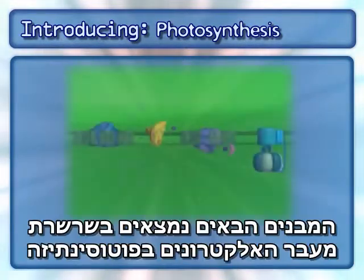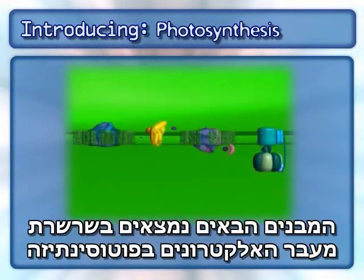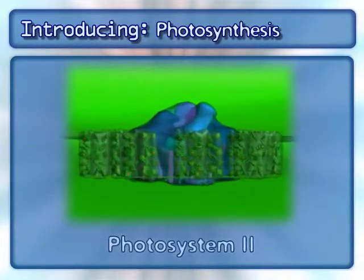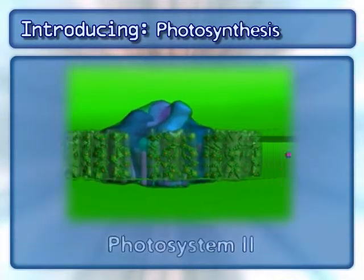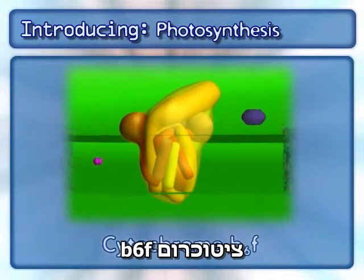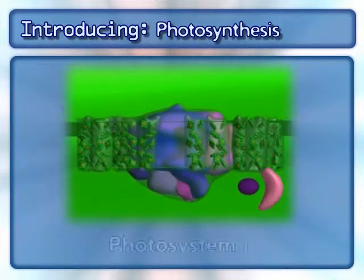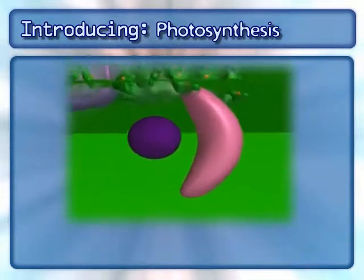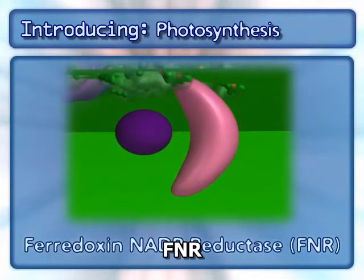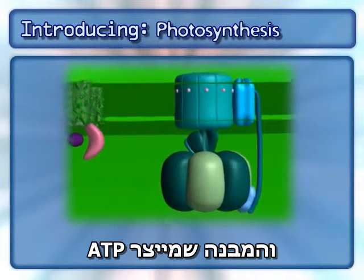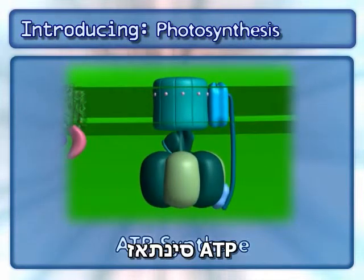The following complexes are found in the photosynthesis electron transport chain: Photosystem II, cytochrome B6F, Photosystem I, ferredoxin NADP reductase, and the complex that makes ATP — ATP synthase.